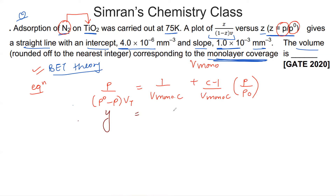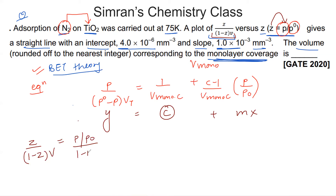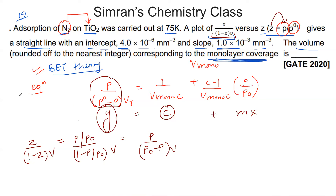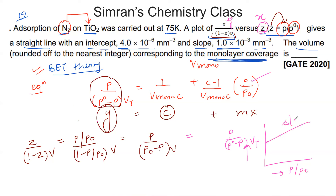The BET equation states: P/(P0−P)·Vt = 1/(V_mono·C) + [(C−1)/(V_mono·C)]·(P/P0). This has the form Y = mX + c, where Y = P/(P0−P)·V, X = P/P0, the intercept = 1/(V_mono·C), and the slope = (C−1)/(V_mono·C). Comparing with the question, where z/(1−z)V is the y-axis and z is the x-axis, the intercept is 1/(V_mono·C) and the slope is (C−1)/(V_mono·C).